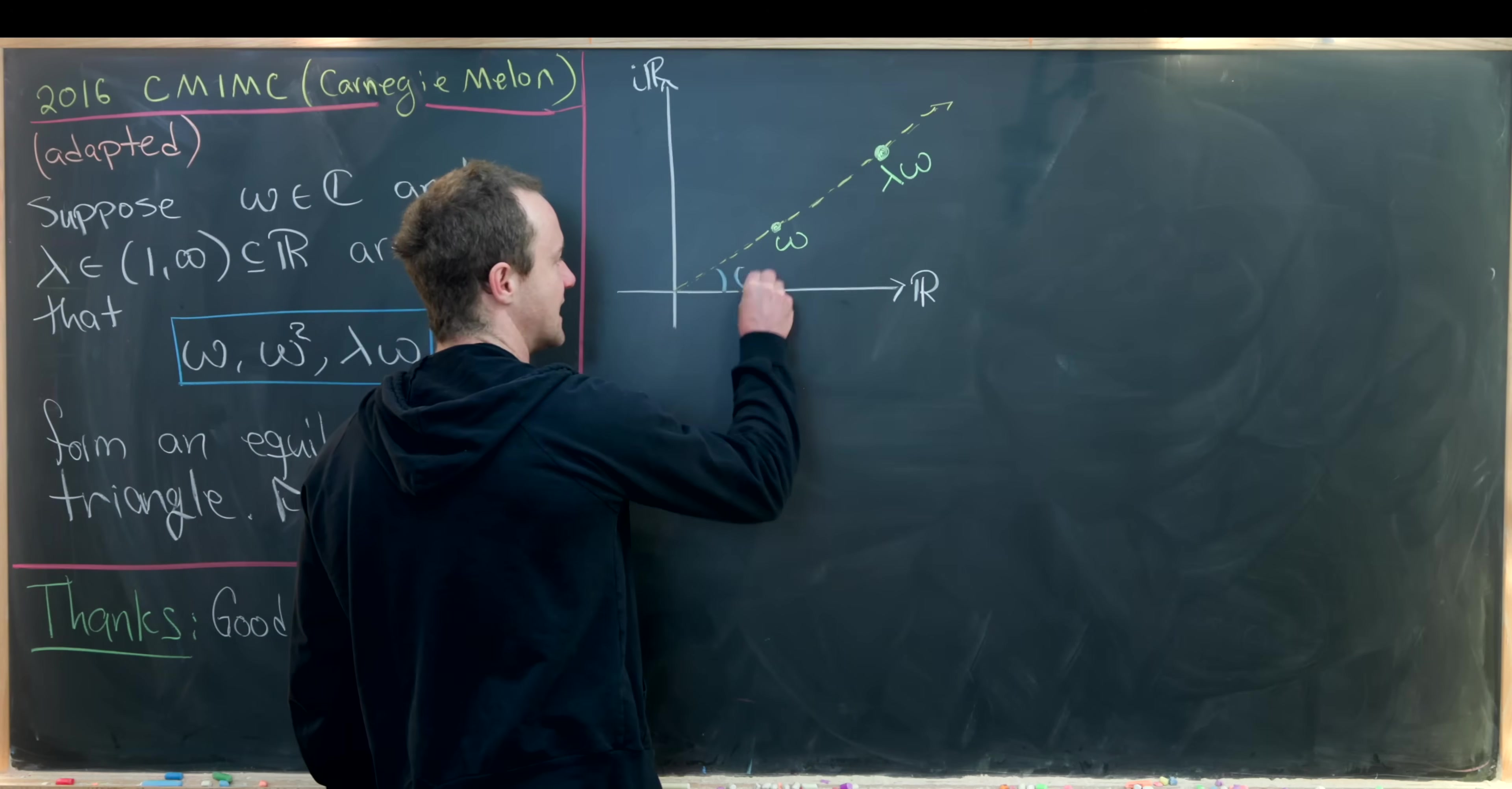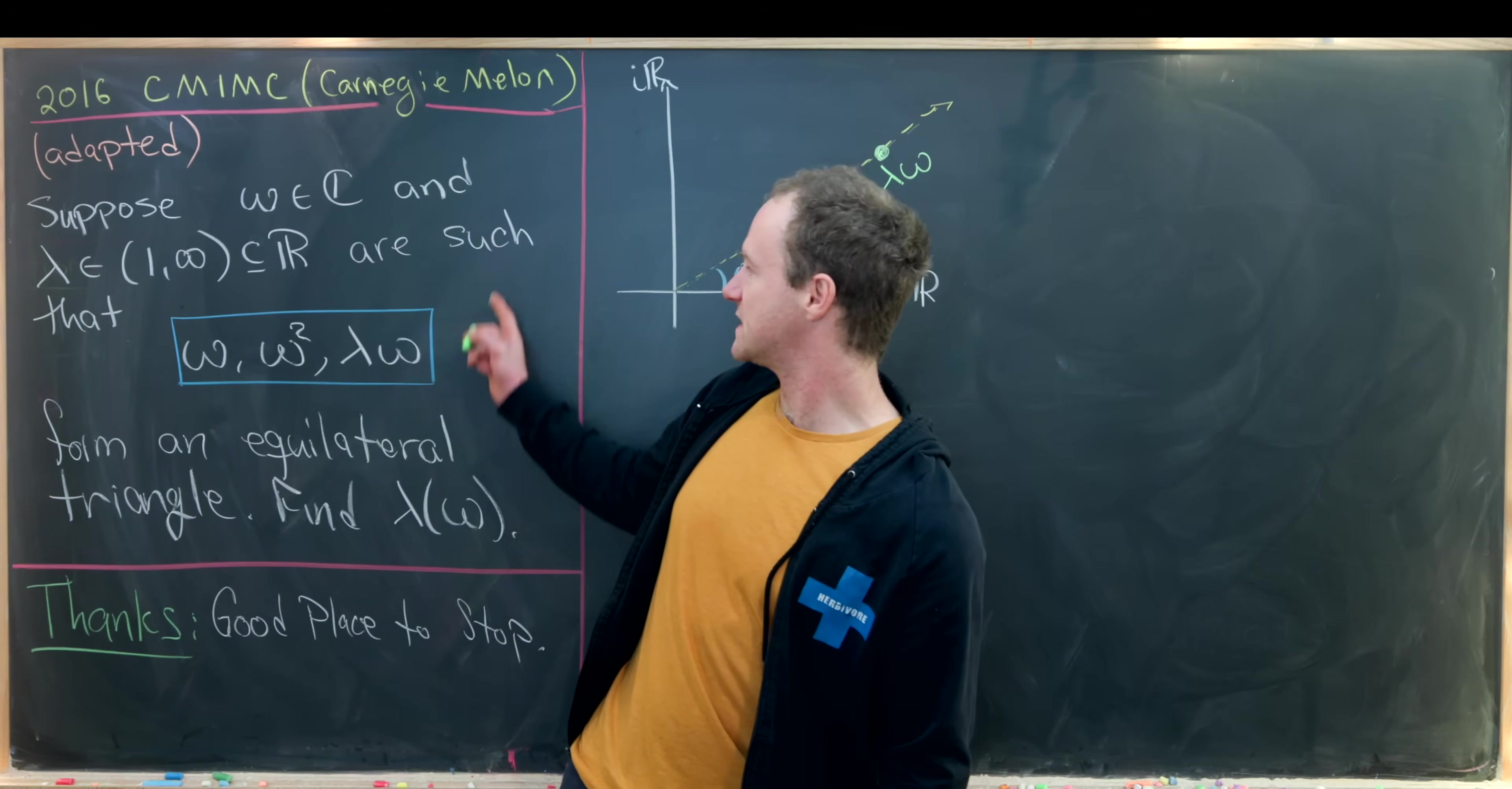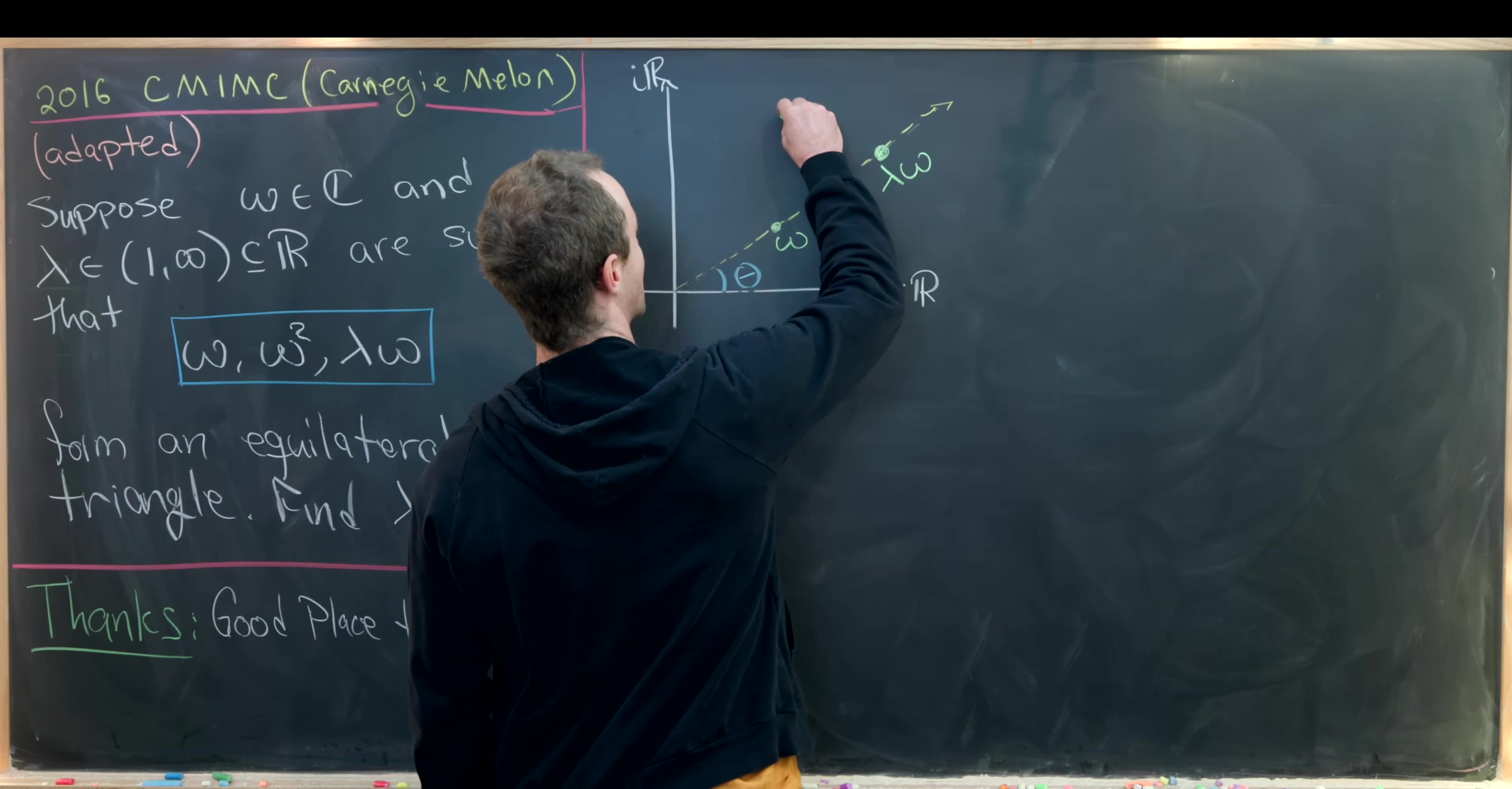So here, if theta is the argument of omega, then 2 theta will be the argument of omega squared. But furthermore, we know that this completes an equilateral triangle, so we can actually just eyeball it and put omega squared maybe right about here.